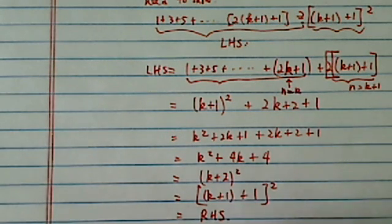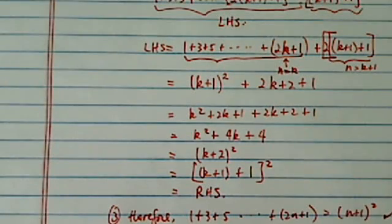1 plus 3 plus 5 plus dot dot dot plus 2n plus 1 equals n plus 1 squared. That's the last step.